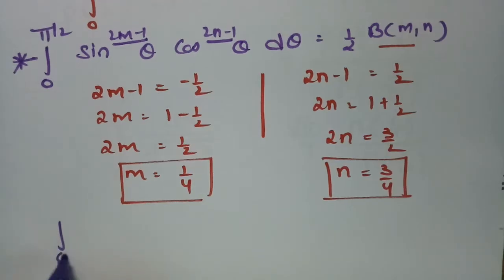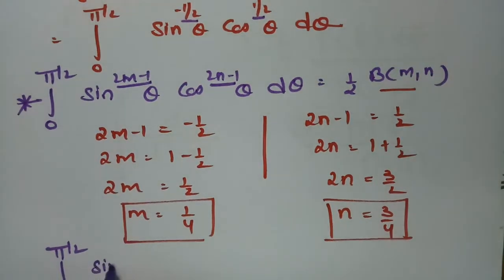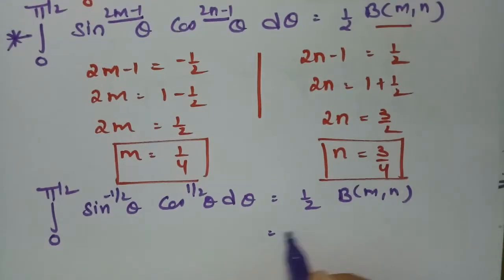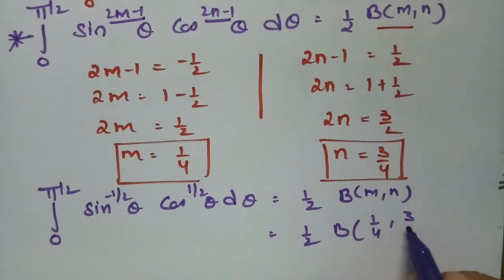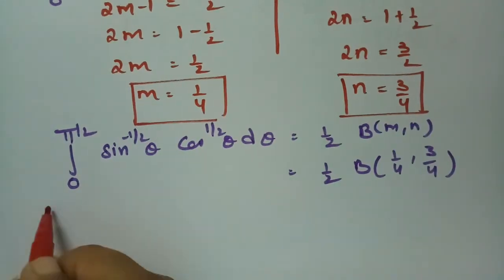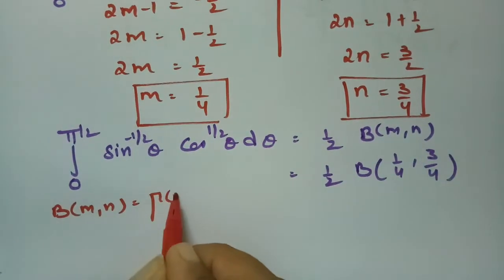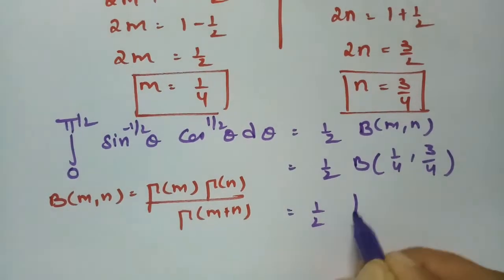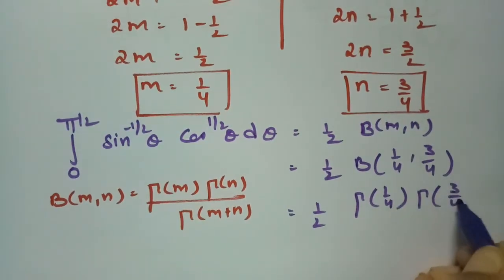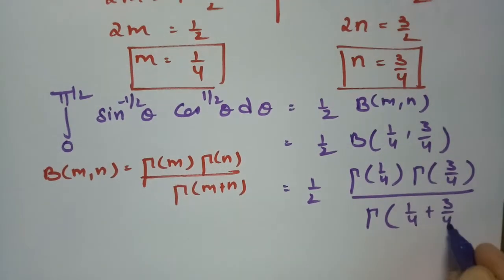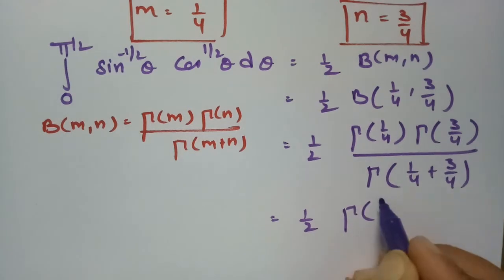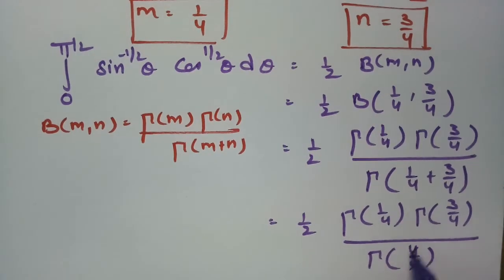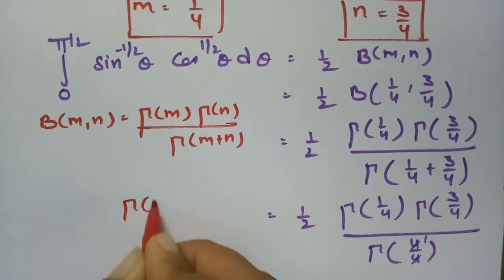So ∫₀^(π/2) sin^(−1/2) θ · cos^(1/2) θ dθ = (1/2) · β(1/4, 3/4). Using β(m,n) = Γ(m)·Γ(n)/Γ(m+n), this becomes (1/2) · [Γ(1/4) · Γ(3/4)] / Γ(1/4 + 3/4) = (1/2) · Γ(1/4) · Γ(3/4) / Γ(1), and since Γ(1) = 1, we get (1/2) · Γ(1/4) · Γ(3/4).